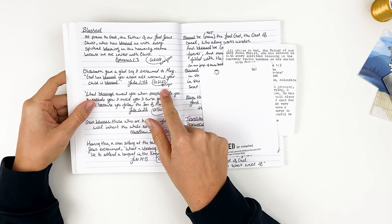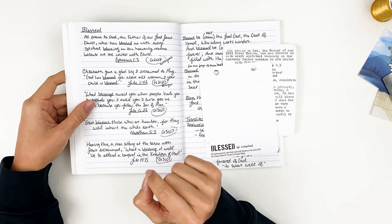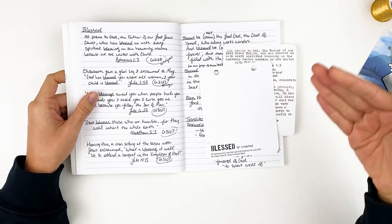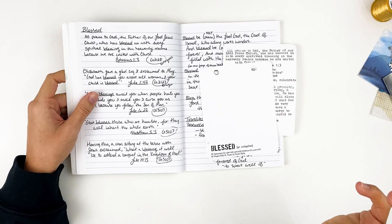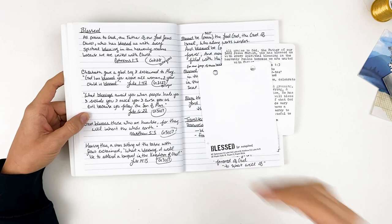This verse, Luke 1:42, actually uses that root word, eulogeo. Elizabeth gave a glad cry and exclaimed to Mary, God has blessed you above all women, and your child is blessed. And so we may look at that and say, okay, God blessed her with this baby. The baby is the blessing. But it's actually this bestowing favor upon her. It's a more abstract type idea as you look at that word. And that's why I love to do word studies, because it really helps you better understand the verses.